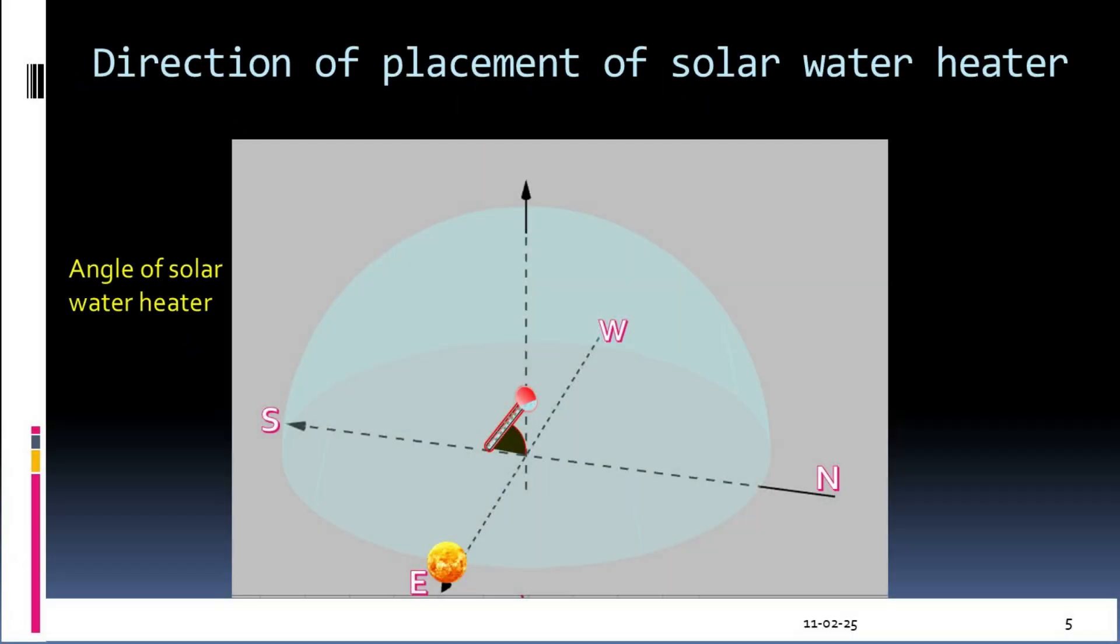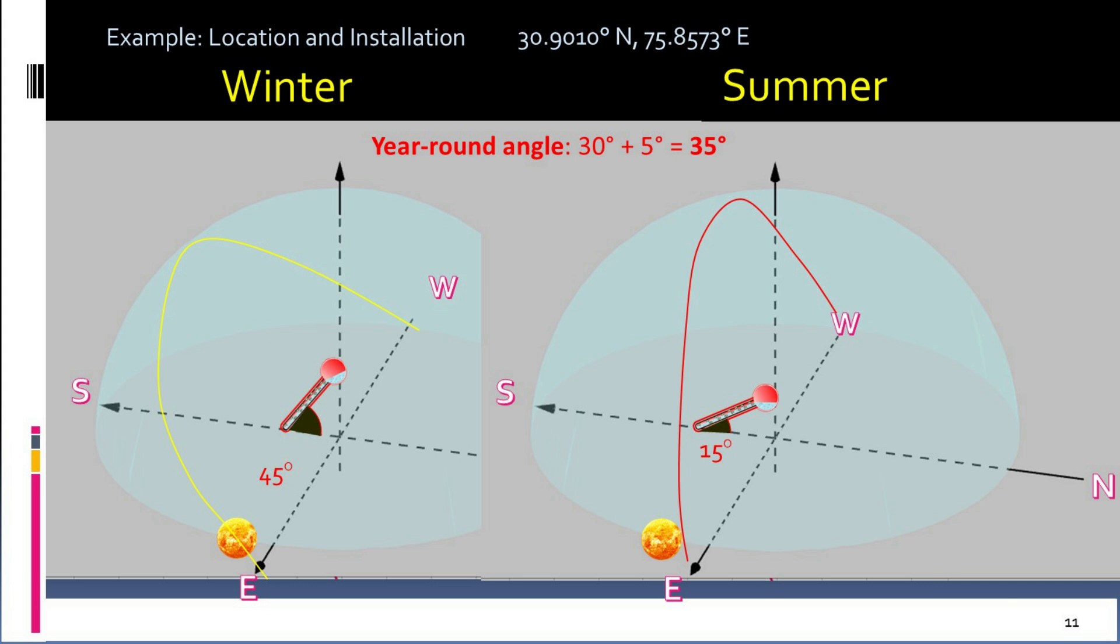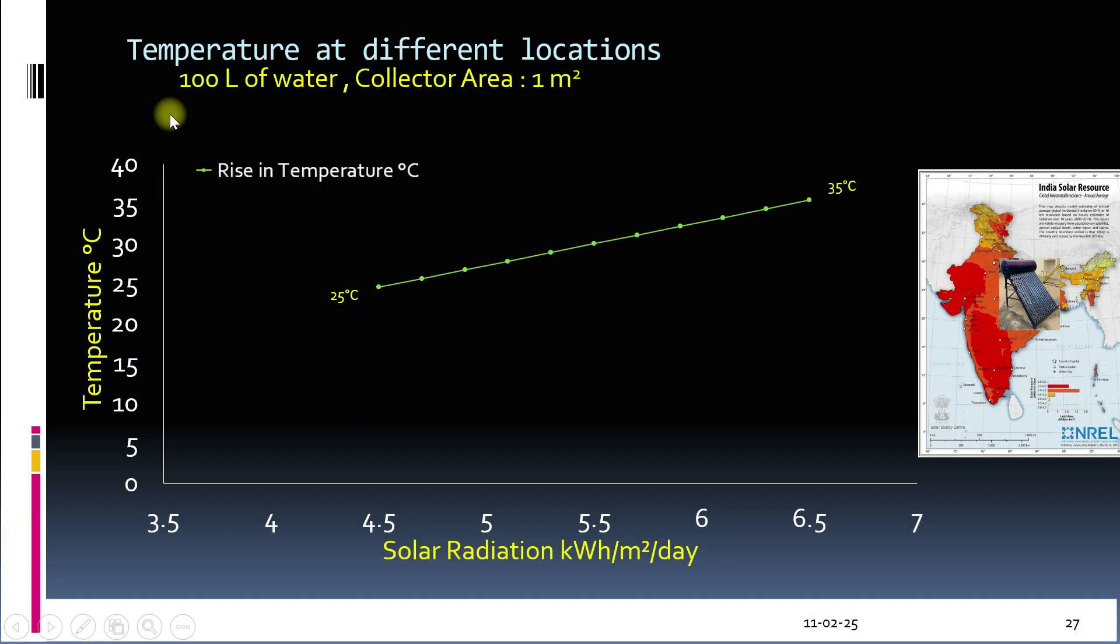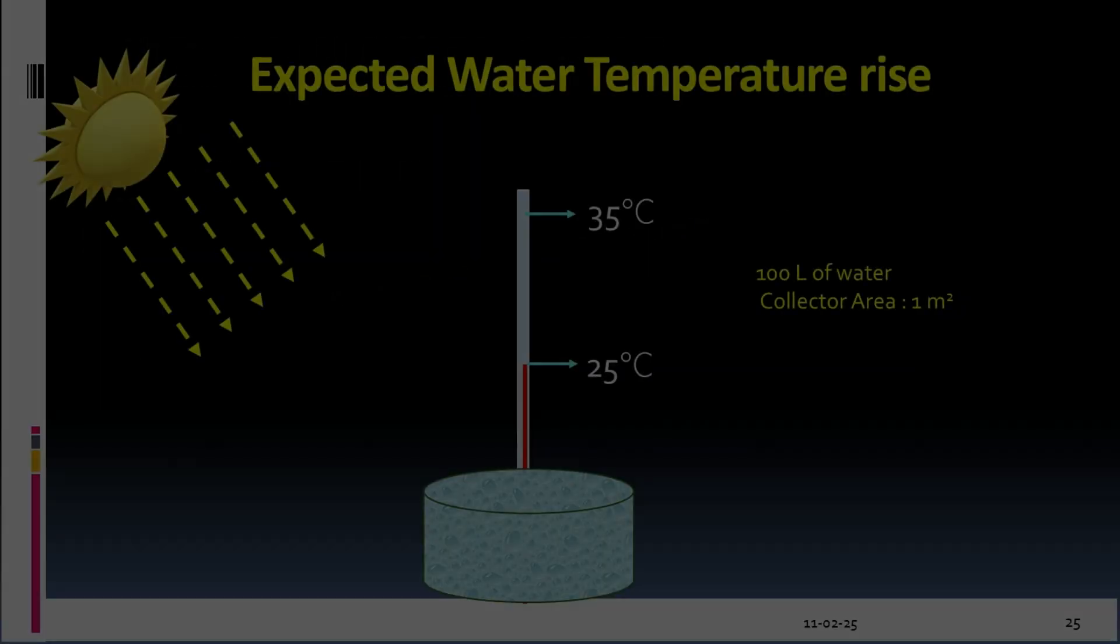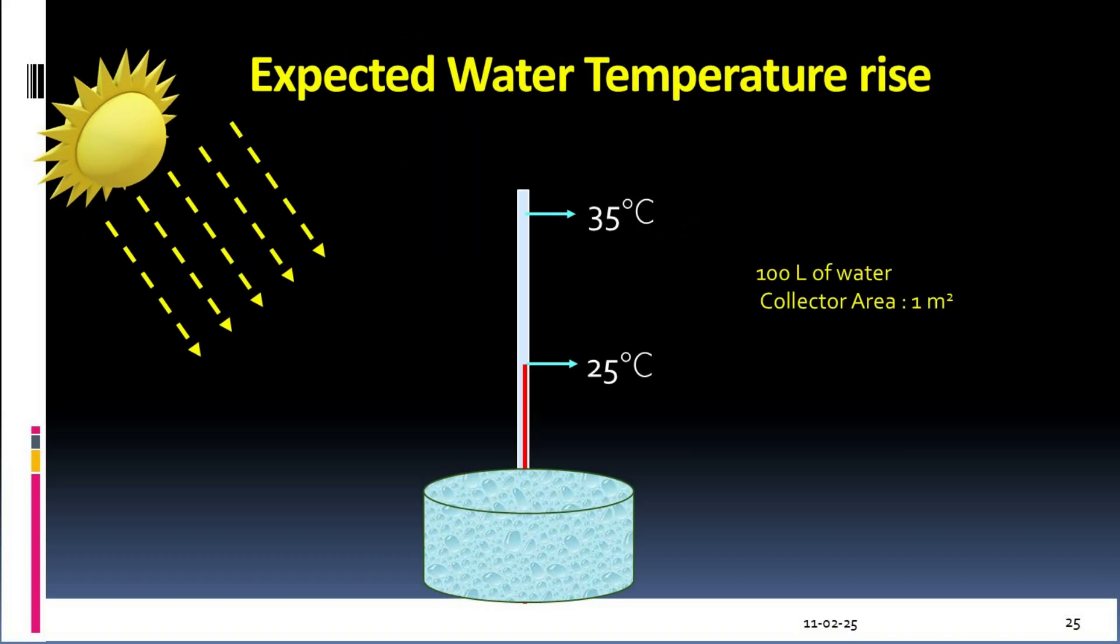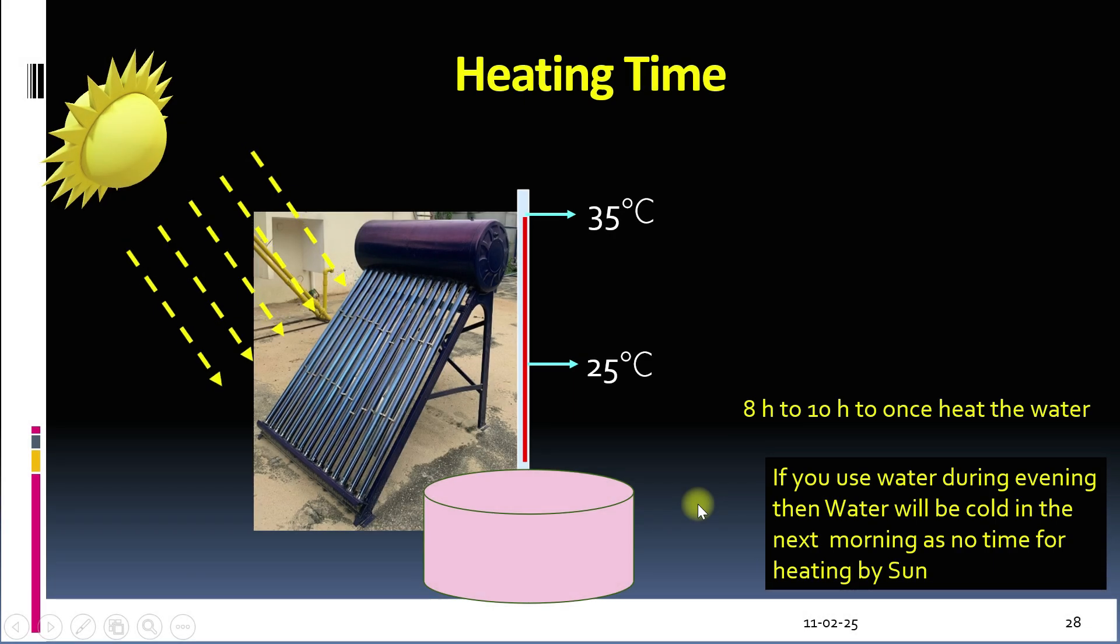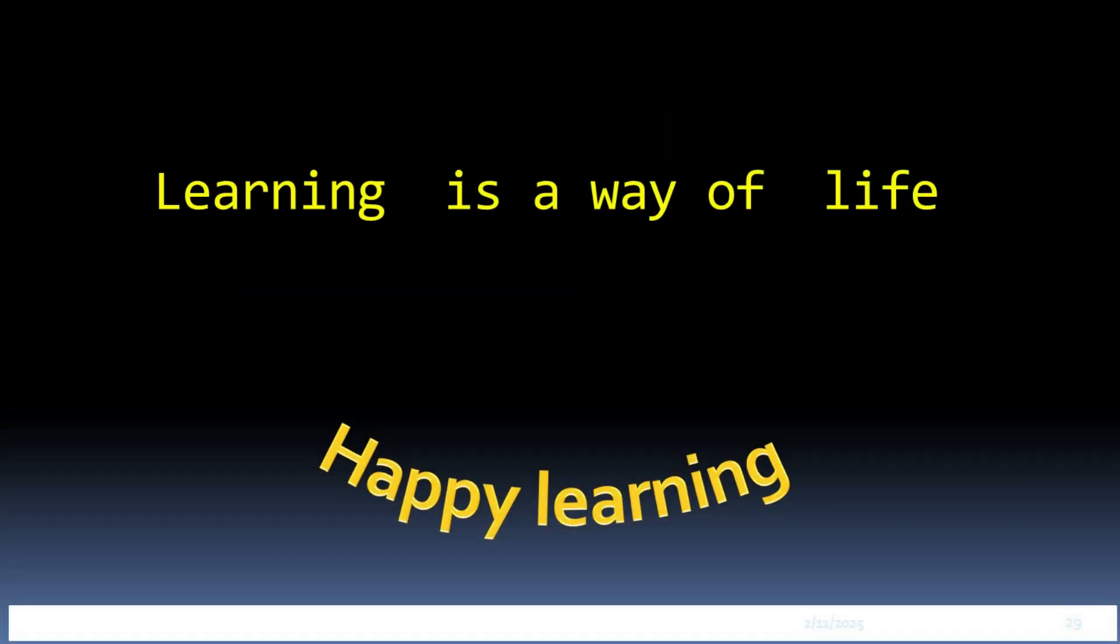So let's summarize. We have discussed that the solar water heater should face south in the northern hemisphere. We should adjust the angle based on the season. For example, latitude plus 15 degrees for the winters. The system operates on the thermosiphon principle and a temperature rise of 25 to 35 degrees Celsius per square meter per day for 100 liters of water may be expected during 8 to 10 hours of heating time. Thank you very much.